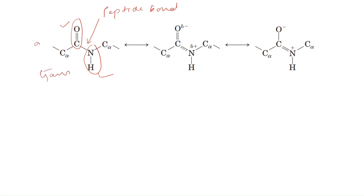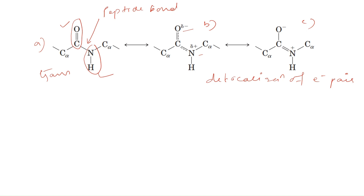Now looking at structures A, B, and C: the peptide bond in structure A is a single bond. Because oxygen is more electronegative, it pulls the shared pair of electrons towards itself, gaining partial negative charge, while nitrogen gains partial positive charge. This causes delocalization of electron pairs, and due to this electron shifting, the peptide bond gains double bond nature as seen in figure C.